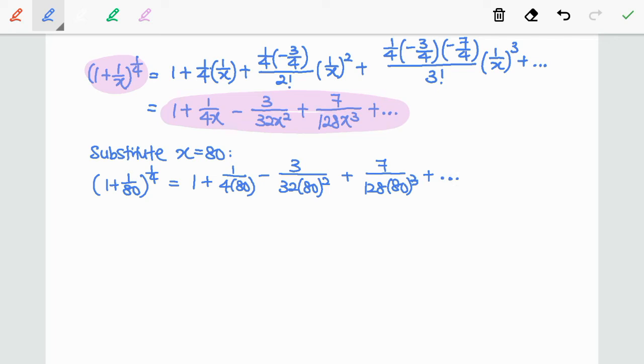After making a substitution, we need to simplify for both sides. On the left hand side, we have (81/80)^(1/4). And on the right hand side, after the calculation, we get 1.0031.